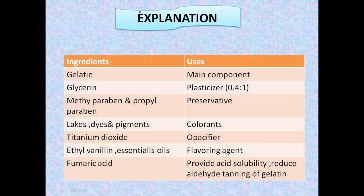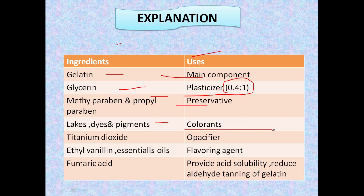In a table of gelatin capsule ingredients and their uses: gelatin is the main component; glycerin is used as plasticizer in ratio 0.4 to 1; methylparaben and propylparaben are used as preservatives; lakes, dyes, and pigments are used as colorants; titanium dioxide (TiO2) is used as opacifier; ethylene and vanillin are essential oils used as flavoring agents. Fumaric acid provides acid solubility and reduces aldehyde tanning of gelatin.